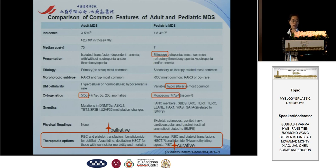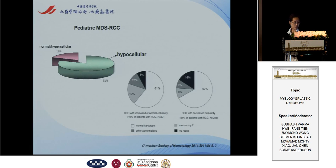The treatment option is curative, which I think is different from adults. This is a study published in 2011. They analyzed pediatric MDS RCC patients and found that hypocellular bone marrow is most common in children. The karyotype showed that more than 60% of patients have a normal karyotype, suggesting that we should look for new genes in these normal karyotype patients.